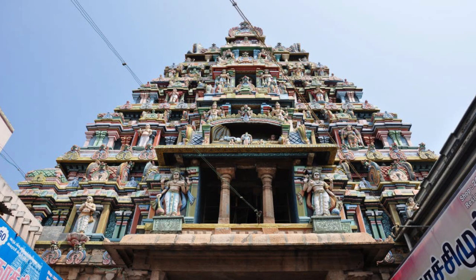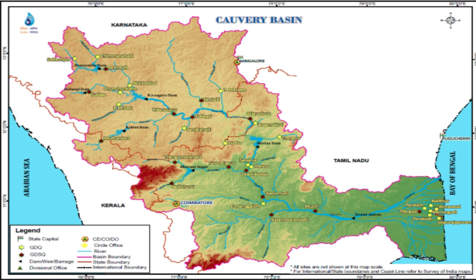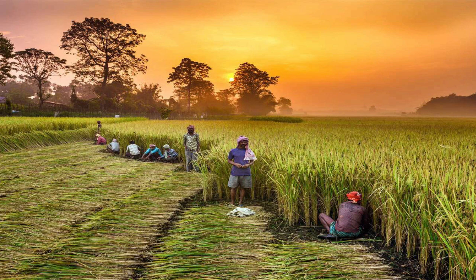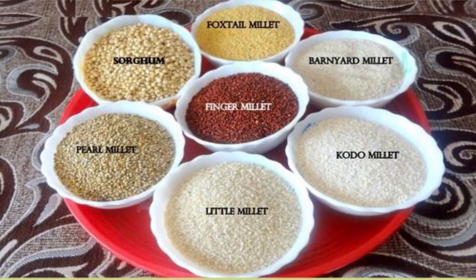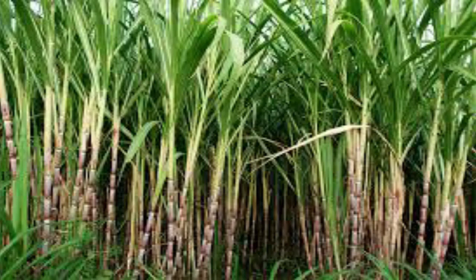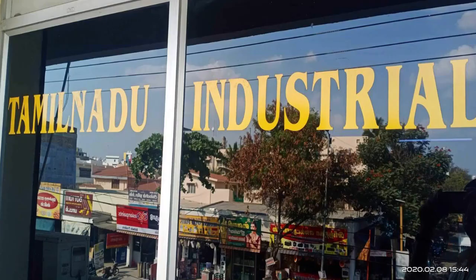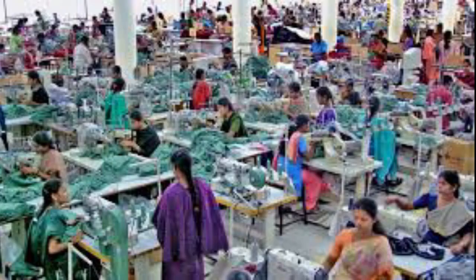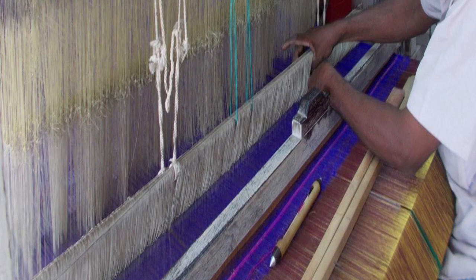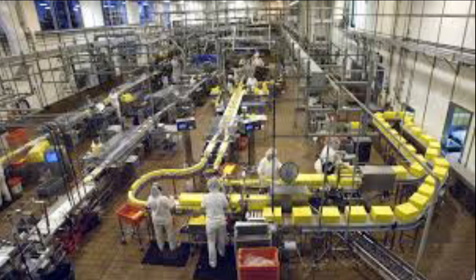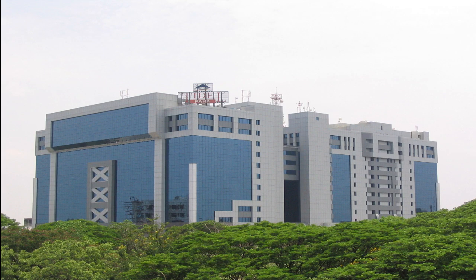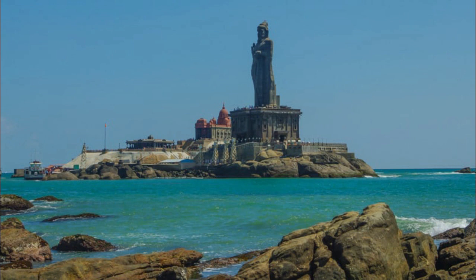The delta formed by the Kaveri river is very fertile. Agriculture is the main economic activity. Main crops grown here are rice, millet, cereals, pulses, and sugarcane. The Kaveri delta is called the rice bowl of Tamil Nadu. Other well-developed industries include textile, handloom, and heavy engineering industries. Chennai is also an important software development center. Kanyakumari in Tamil Nadu is the southernmost tip of the Indian mainland.